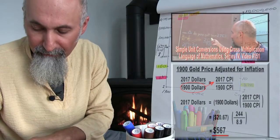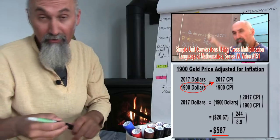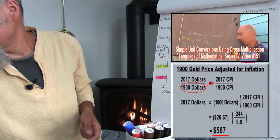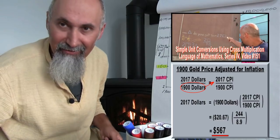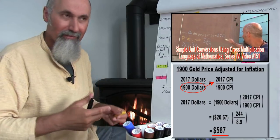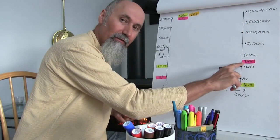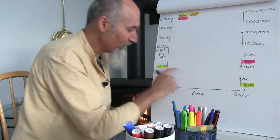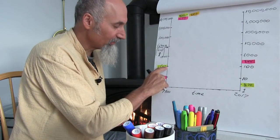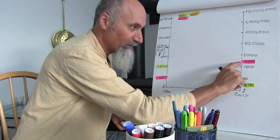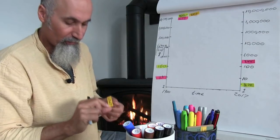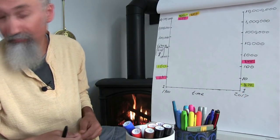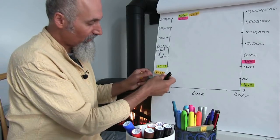We're not going to adjust for inflation, because $20.67 in 1900 was equivalent to $517 in 2017. So if you had your wealth in this currency and inflation was doing its thing, the $20.67 was worth $517 in today's dollars. But we're just going to use the nominal value.